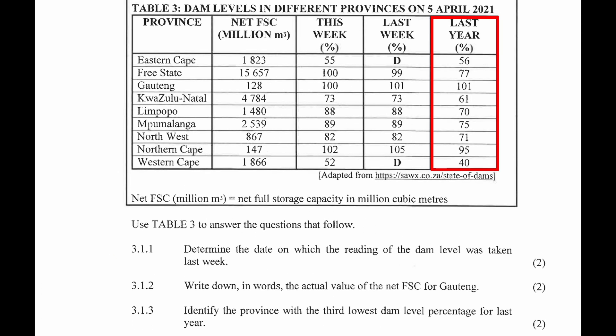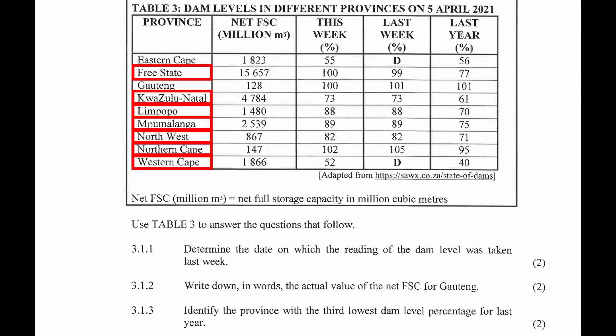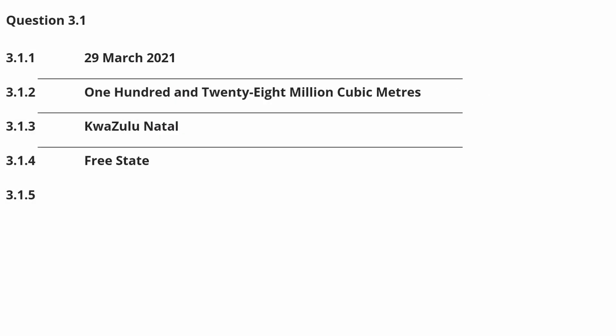Question 3.1.4: Determine which province had the highest percentage increase in dam levels from last year to this week. When we compare the values of last year to this week, we see that several provinces had a percentage increase in dam levels, but the highest percentage increase came from Free State.